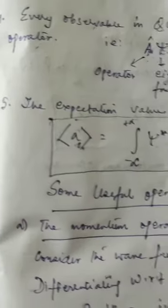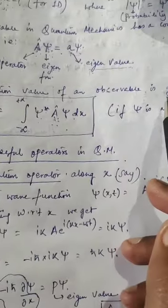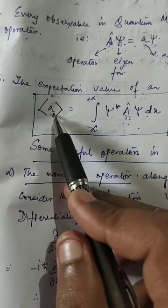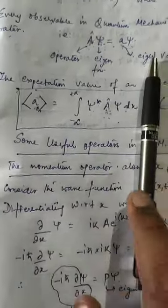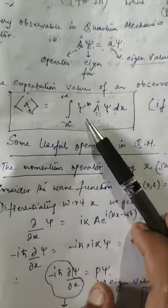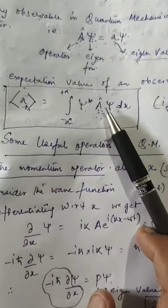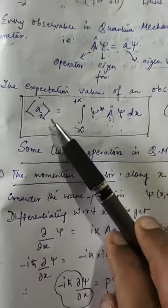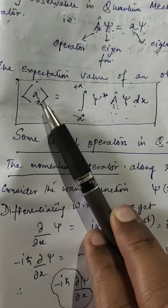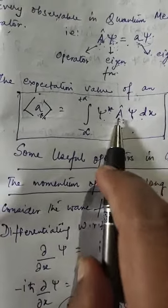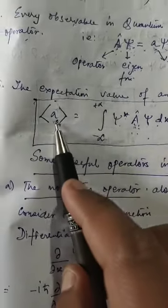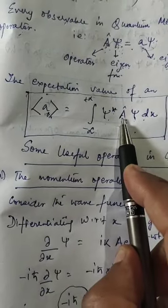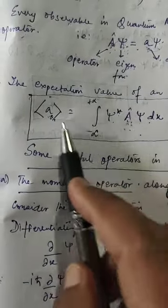So the expectation value of an observable is given by this formula — the average value of any measurement. If you are measuring position N times, the average position is found by sandwiching the position operator between psi-star and psi and integrating. For average momentum, use the momentum operator; for average energy, use the energy operator — sandwiched between psi-star and psi and integrated.